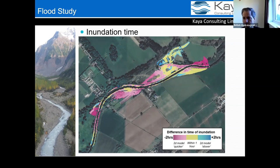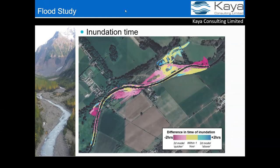Kirsty asks: is there any best practice guidance available or under development for 2D modeling of rivers? Lee responds that there isn't really — it's often used for specific assessments or research purposes, and while lots of academics are working on this, there isn't practical guidance at the moment for flood studies. Hopefully we're getting close to that and guidance will follow from practice.